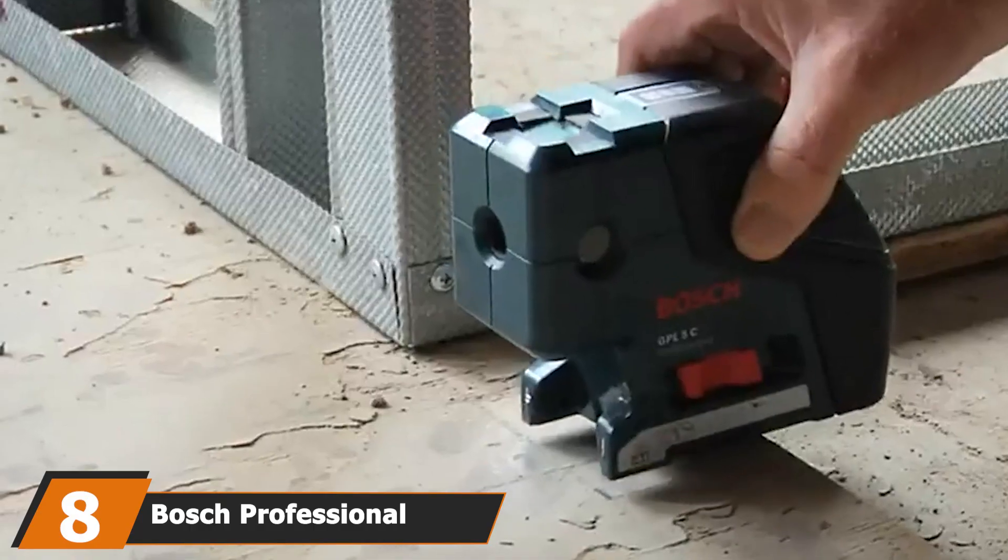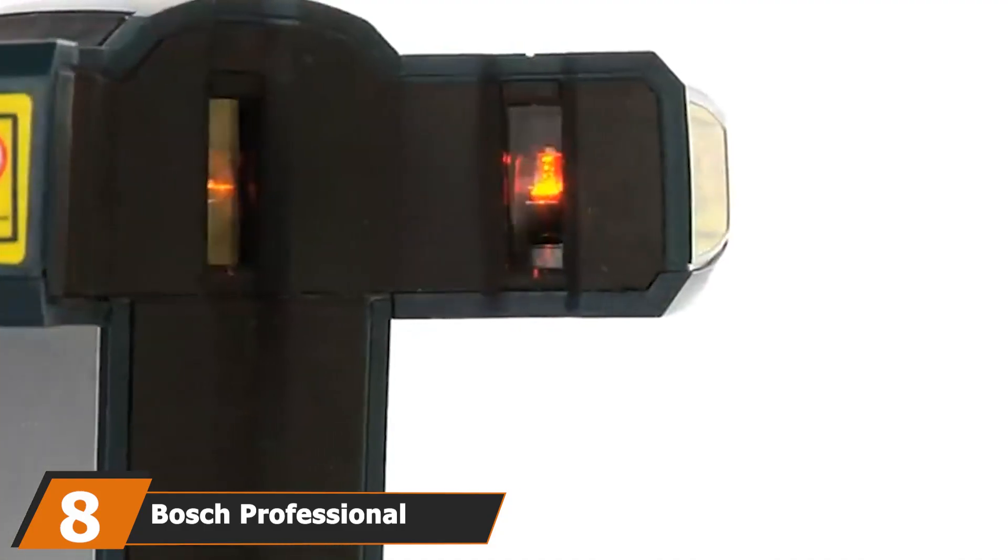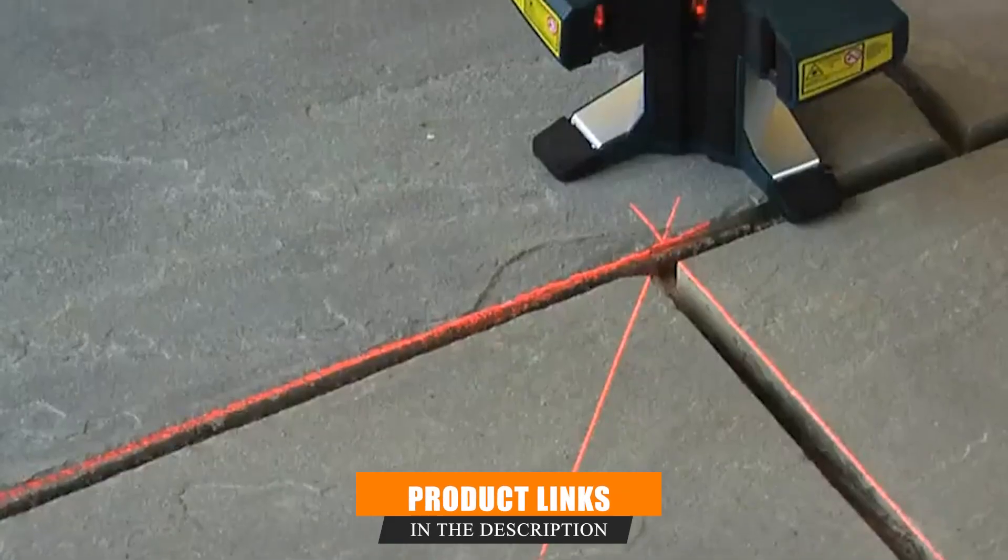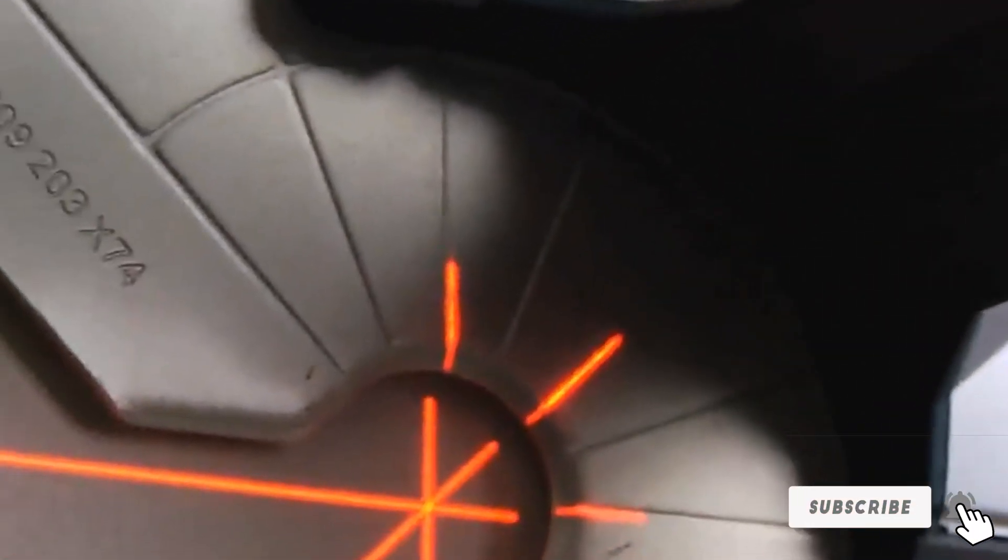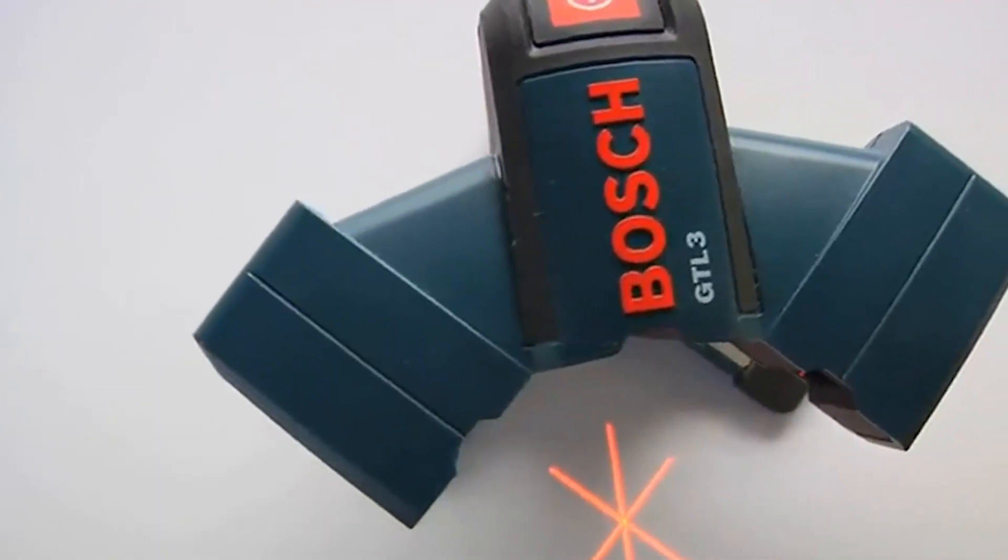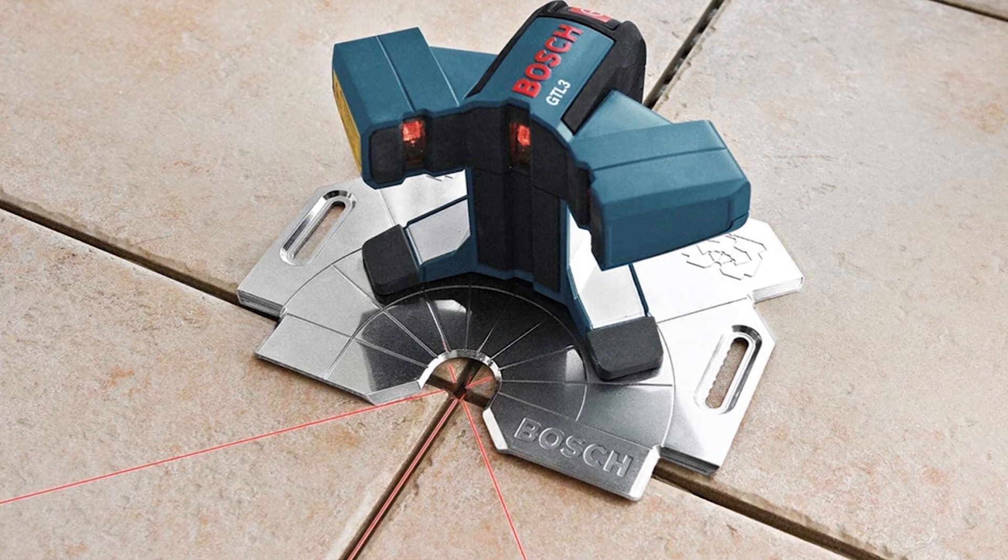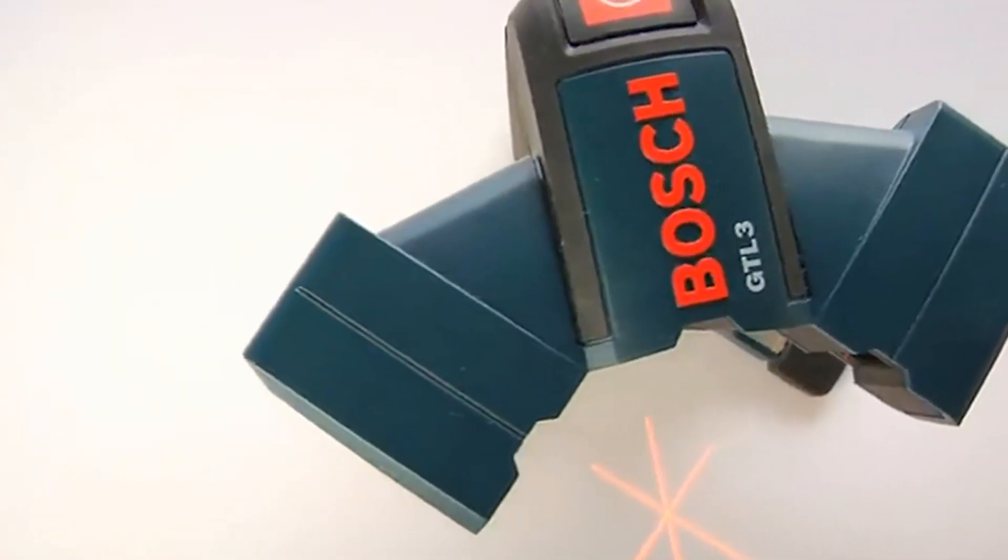The number 8 position is held by Bosch Professional Tile N-Squared Layout Laser GTL-3. Ideal for professional tilers or those who are undertaking multiple projects, this precision laser projects 90-degree lines for squaring. The laser lines are positioned in front of the laser base for precise adjustment and easy centering over point. Obstruction and uneven surfaces are no obstacle for this piece of kit, as the laser lines raise from the surface.